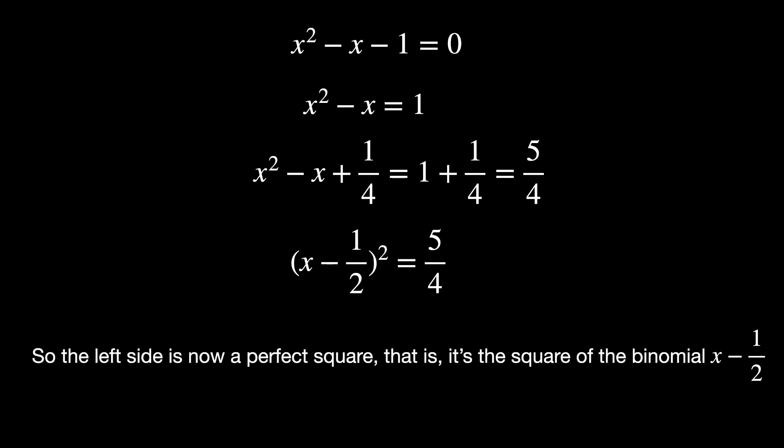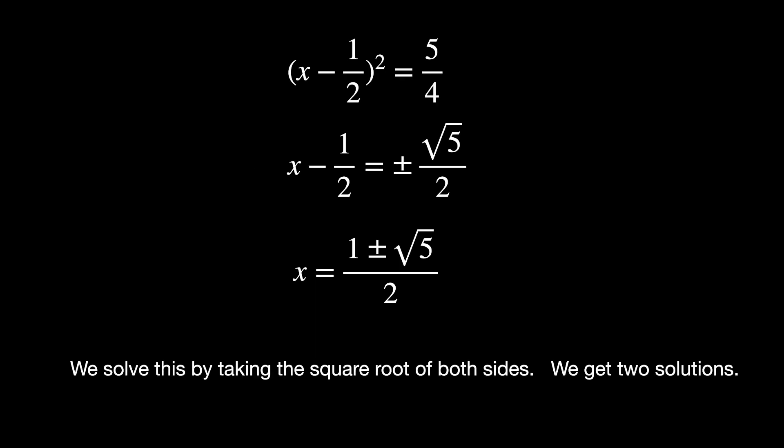So the left side is now a perfect square, that is, it's the square of the binomial x minus 1 half. We solve this by taking the square root of both sides. We get two solutions.